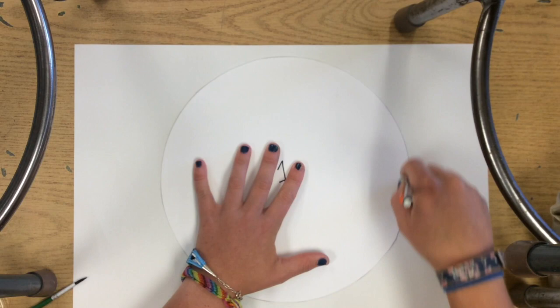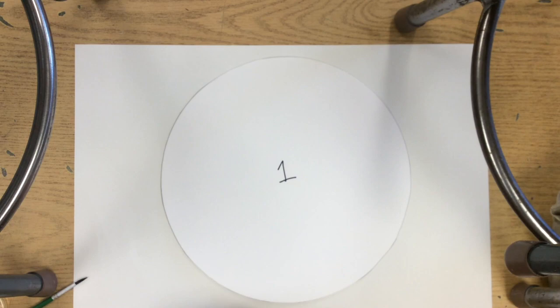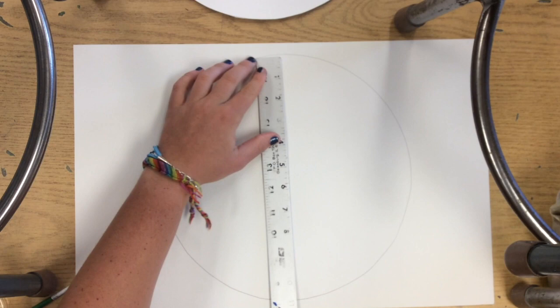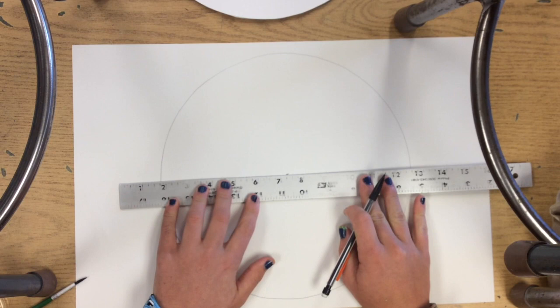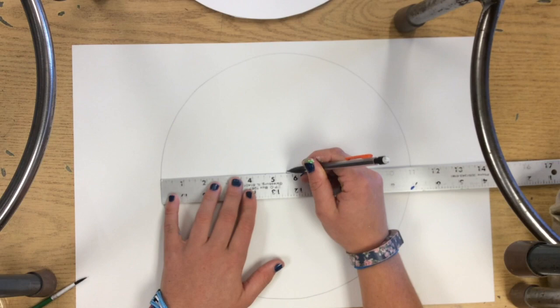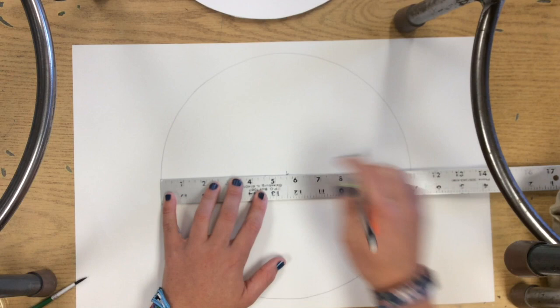To get started, you're going to trace around your largest circle, mine is labeled circle number one. Now I'm going to find the diameter. This circle is 11 inches, so it's going to be about 5.5 inches there in the center. These halves might not be perfect, but do your best. If you really want to get precise, you'll just have to use some more measuring.